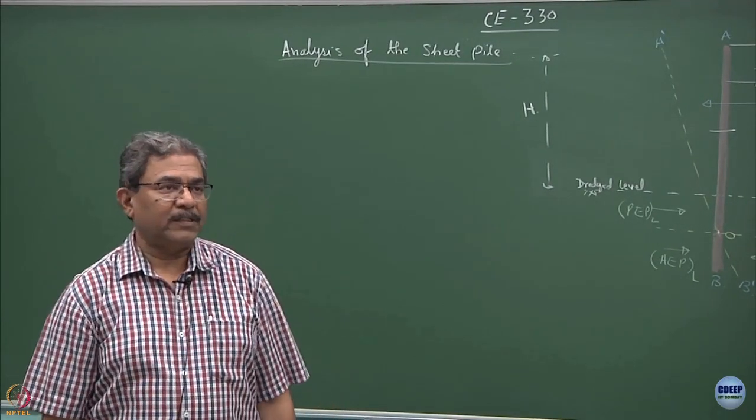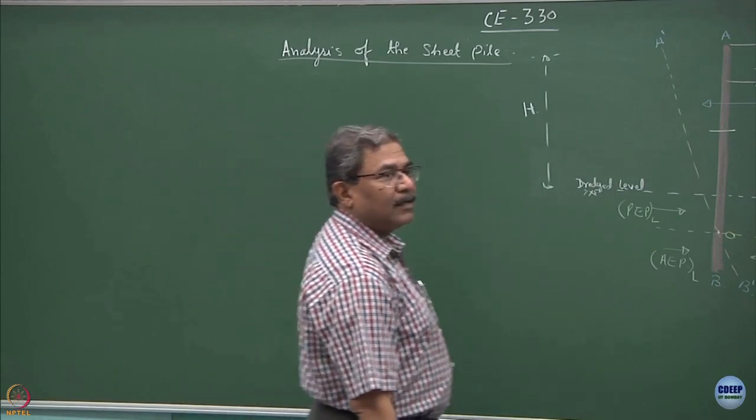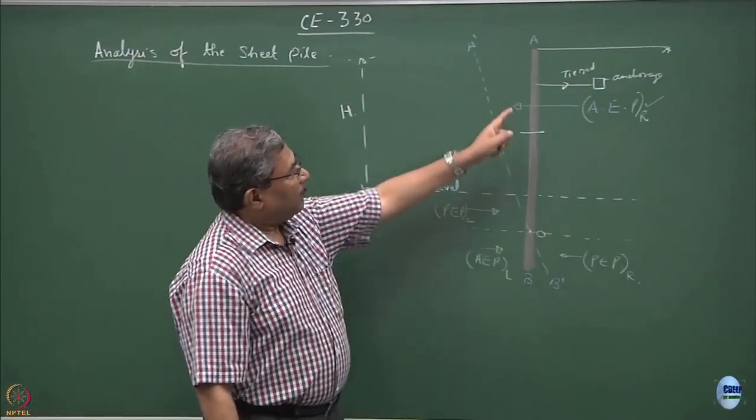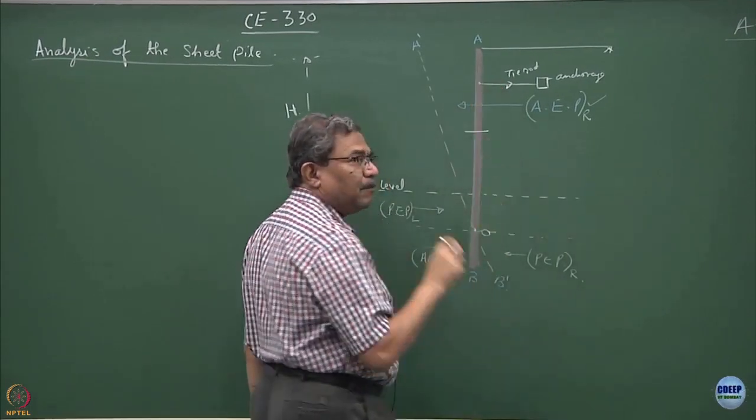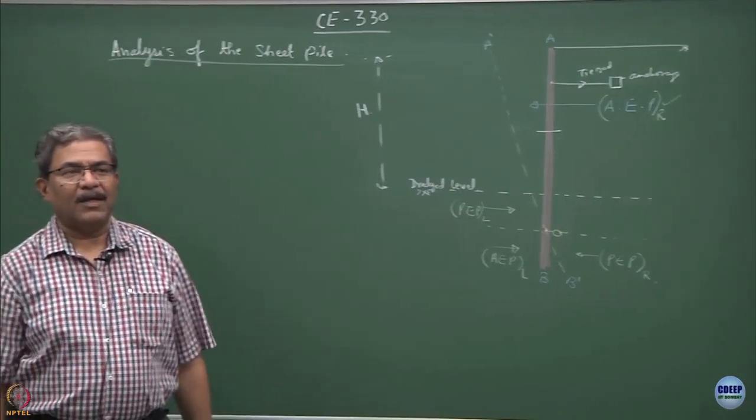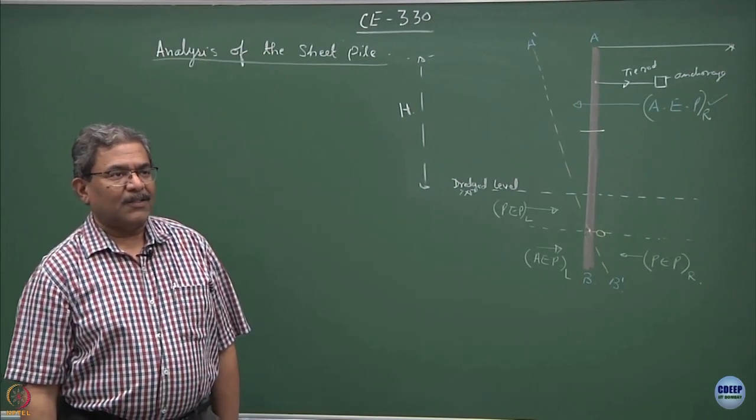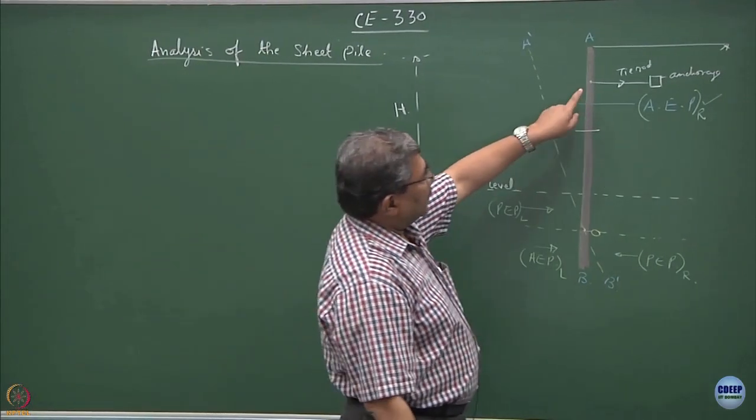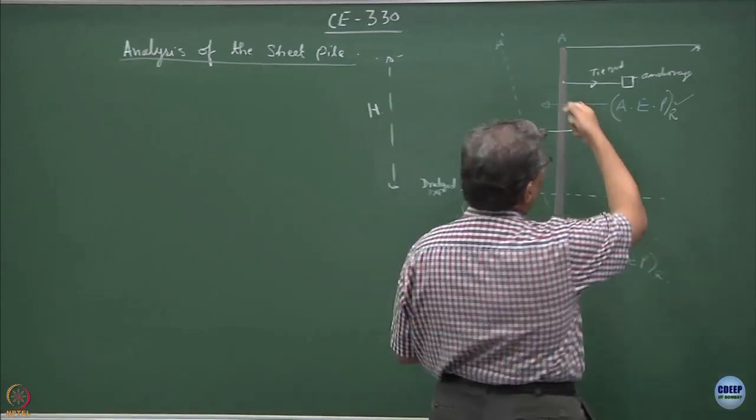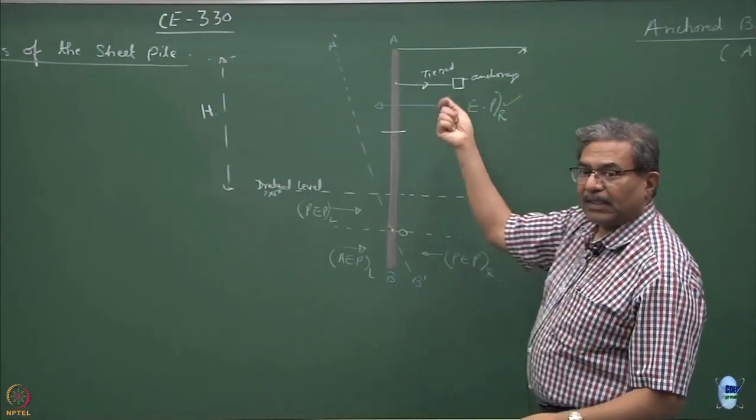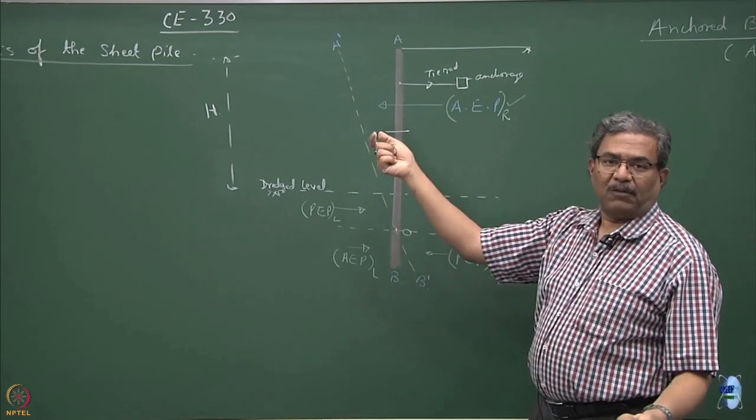We want to avoid this type of situation in the field. So, the moment I put a tie rod, this point starts behaving like a pin. That means what I am doing is this becomes a pin joint and by propping it from here, I am reducing the bending moments. That is the mechanistic model.